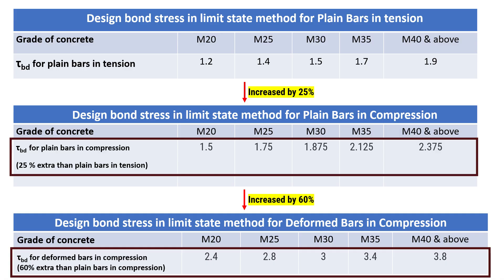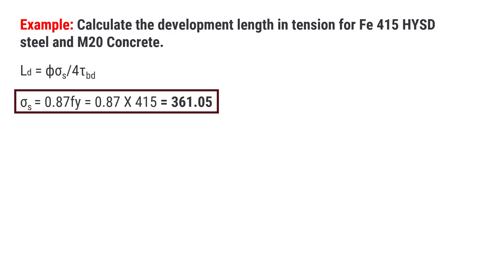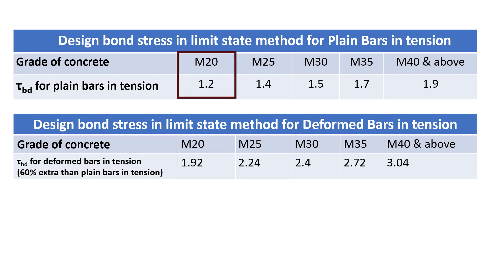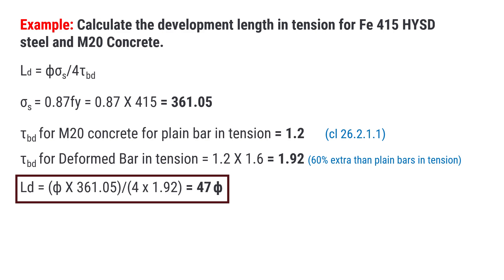Now, time for an example. Let's calculate the development length in tension for Fe415 HYSD steel and M20 concrete. First, we find Sigma_S, which is 0.87 times the yield strength. Then Tau_BD for M20 concrete is 1.2 for plain bars, and for deformed bars it is 1.92. After putting all these values into our equation, the development length is 47 times the nominal diameter.